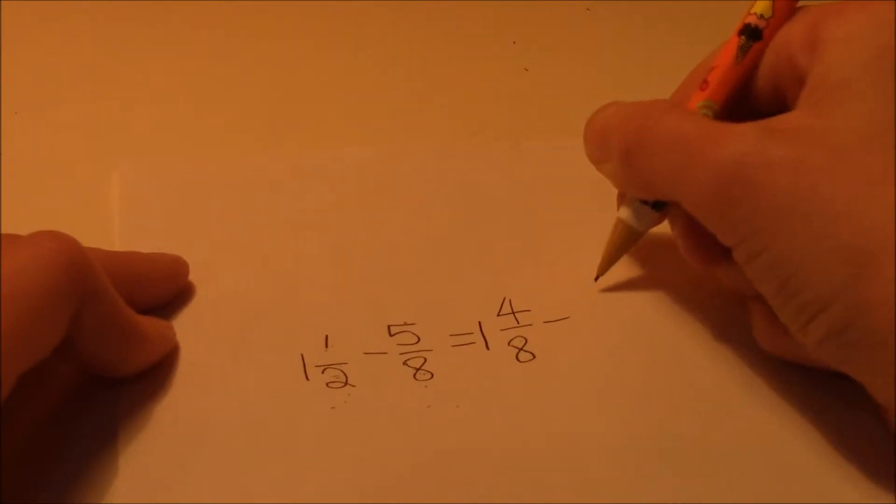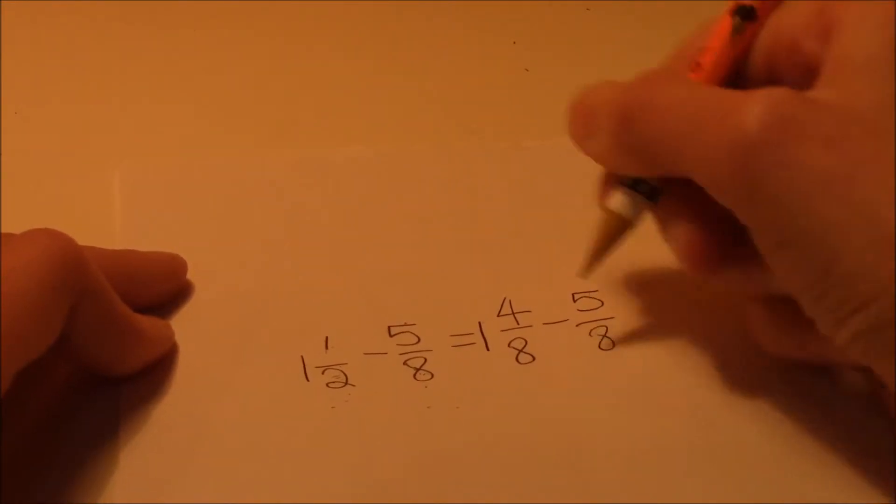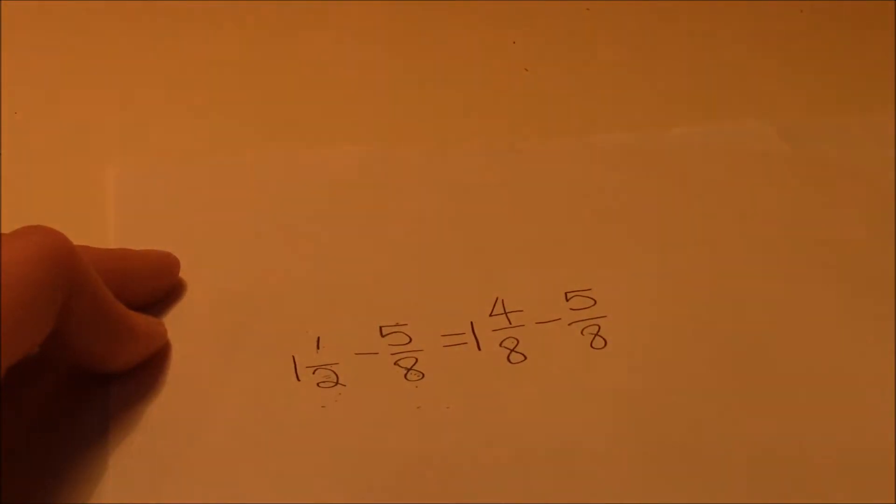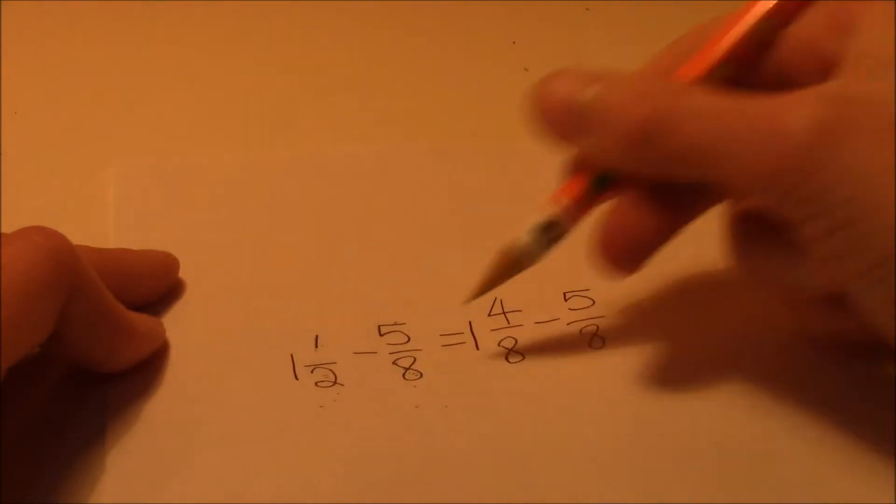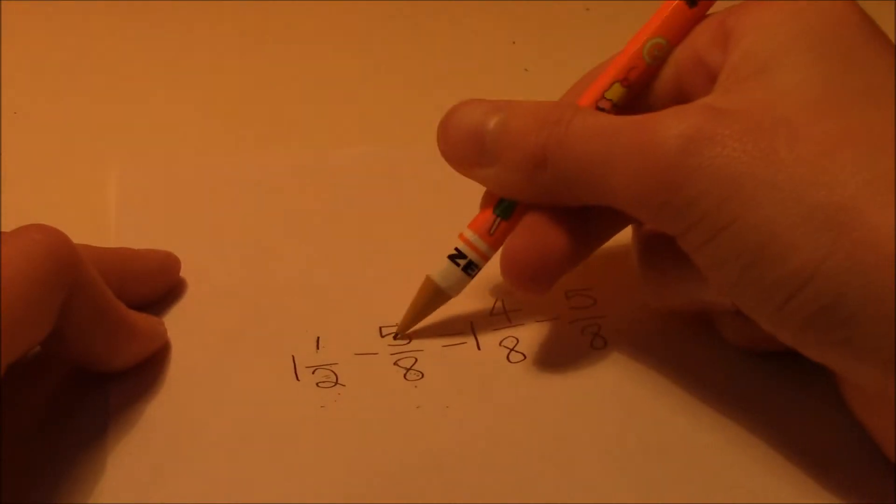Then, we minus it by 5 over 8, which is this number. Because 8 goes into 8 one time, so this doesn't change.